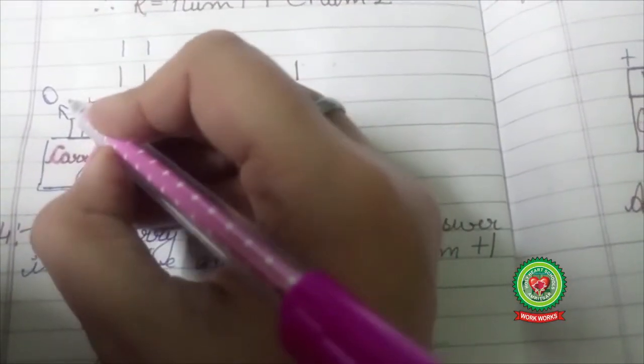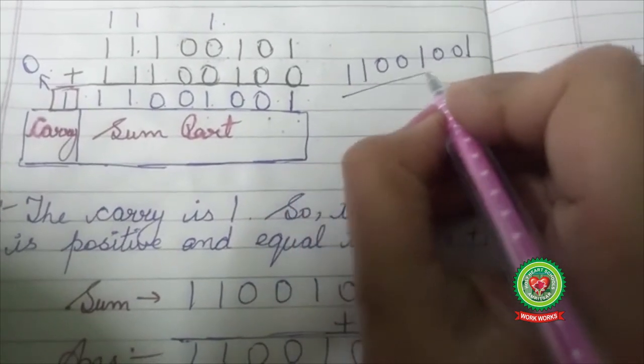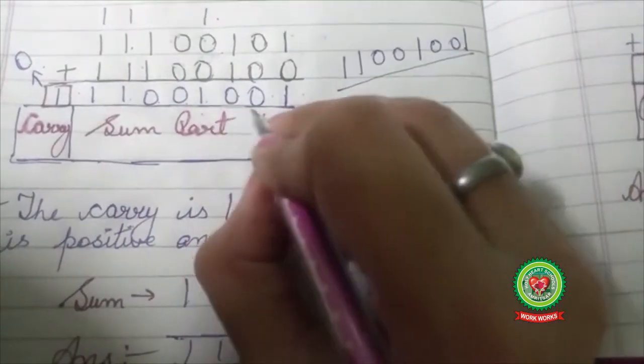But if my carry would be 0, then I will find out 1's complement of this sum part. Means I will invert 1 to 0 and 0 to 1.